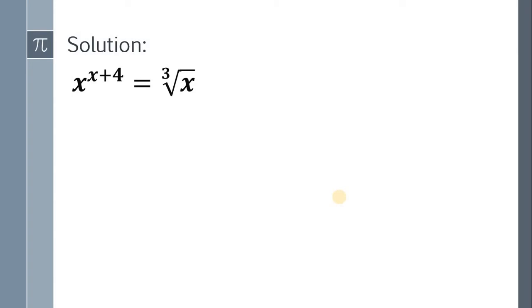First thing to do is to simplify this equation. If we have nth root of b raised to m, it equals b raised to m over n. This cube root of x can be written as x raised to 1 over 3.